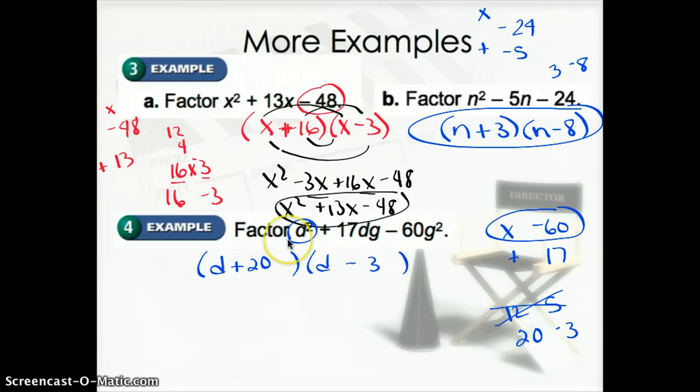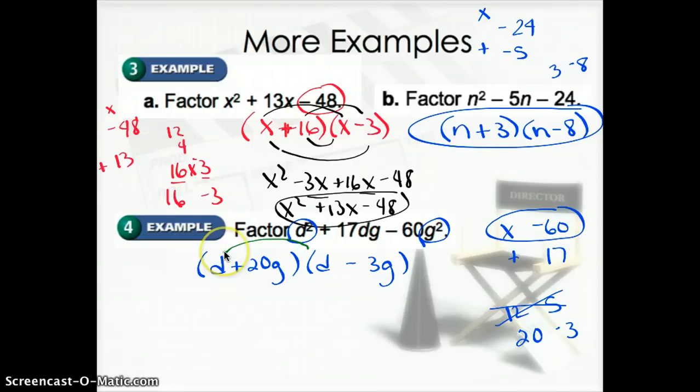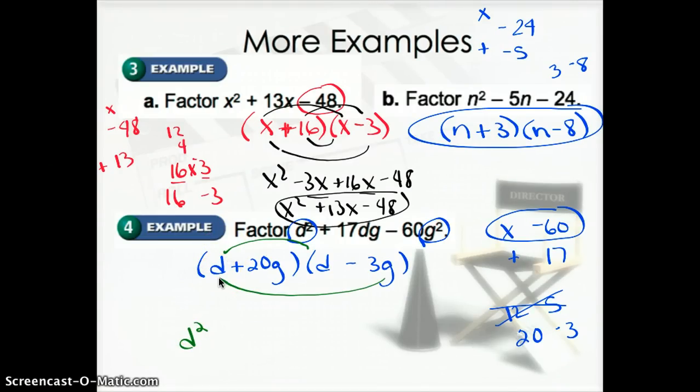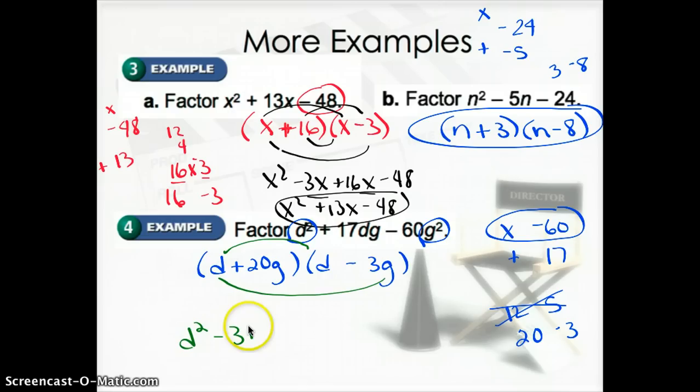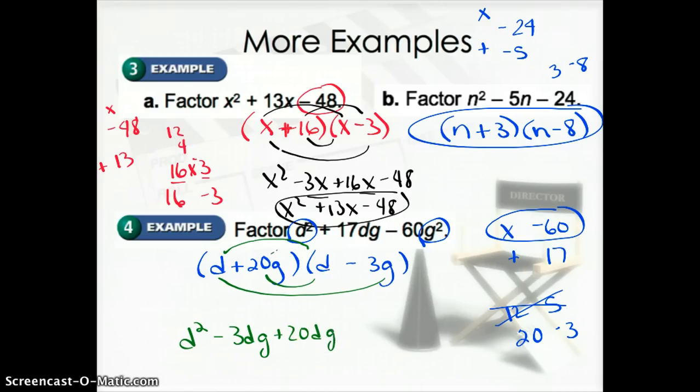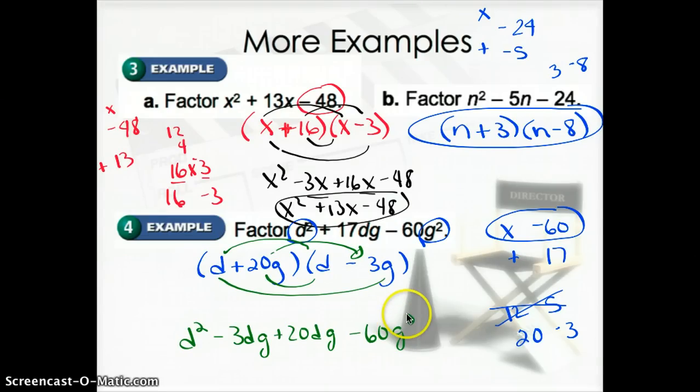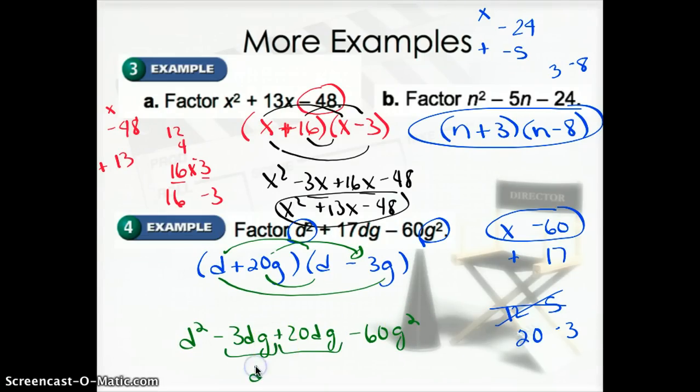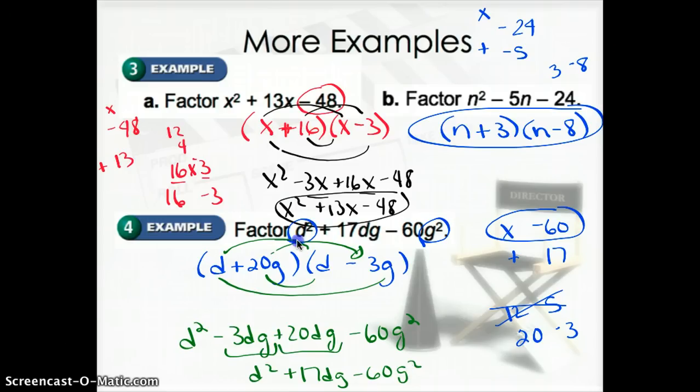So normally I might think it's just D plus 20 and D minus 3. But notice, not only is D squared at the end, we have a G squared. So that's going to have to be 20G and 3G. And I think this would be smart to double check because it looks a little harder. So D times D is D squared. D times negative 3G is negative 3DG, it's alphabetized. 20G times D, that's positive 20DG. Again, I alphabetized it. And then 20G times negative 3G is negative 60G squared. Add my like terms, and I get D squared plus 17DG minus 60G squared, which is my original trinomial. So it looks like I factored it correctly and I'm done.